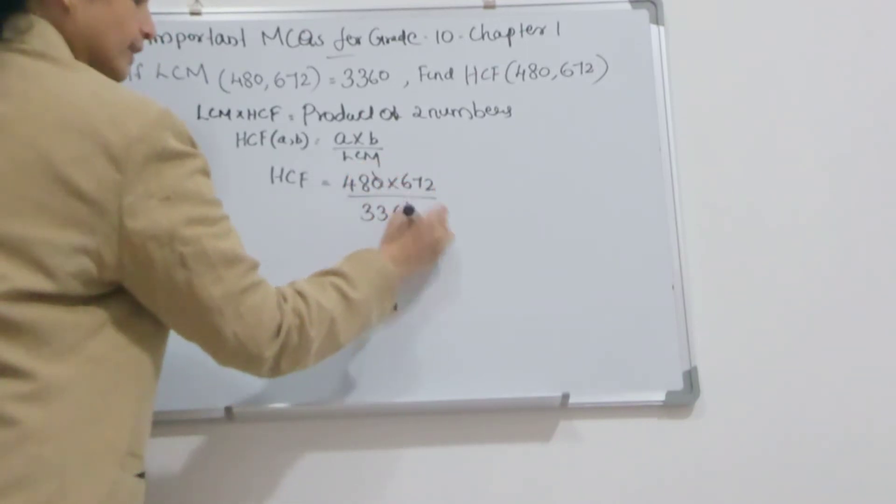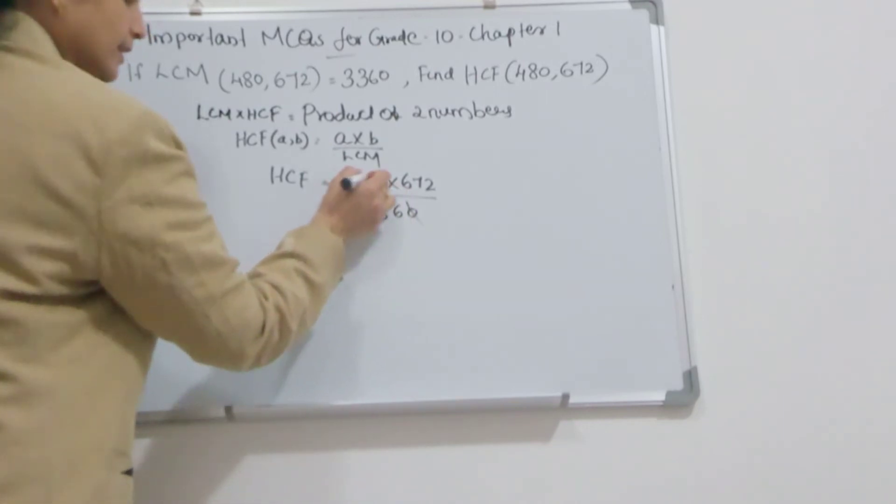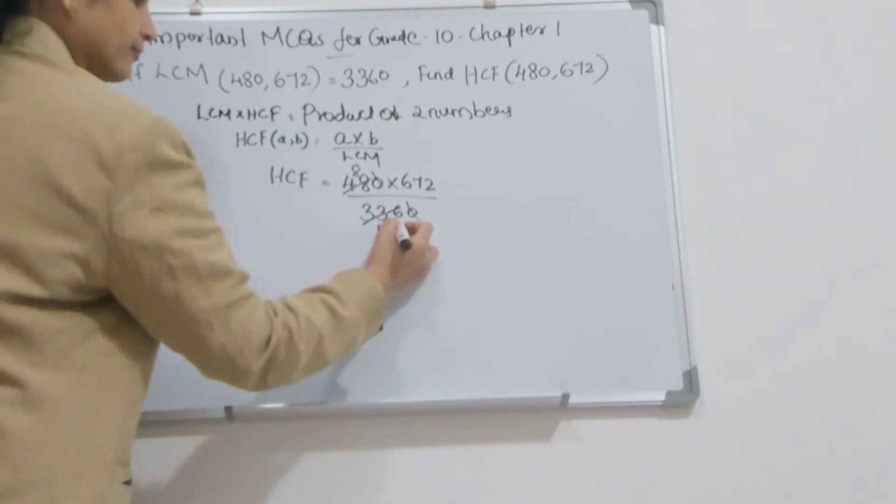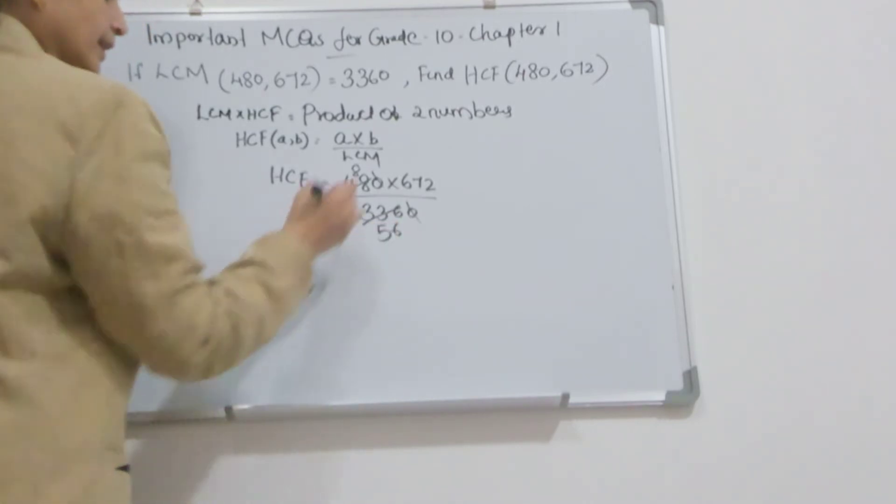To simplify, 0 and 0 can cancel. 6 will go into 48 and 336. Here it is 8, and here it is 56.